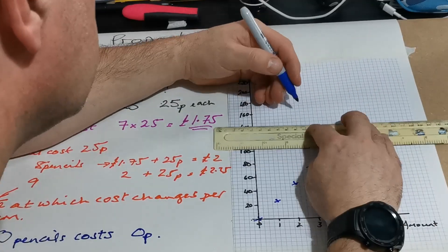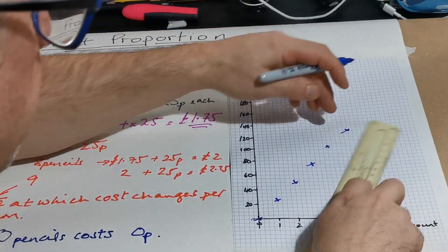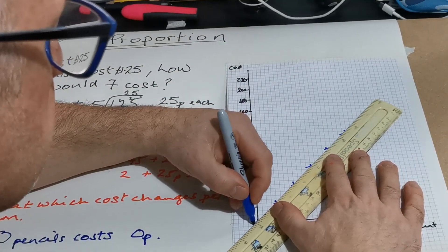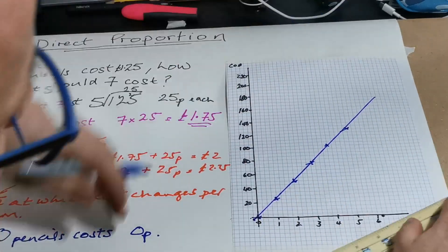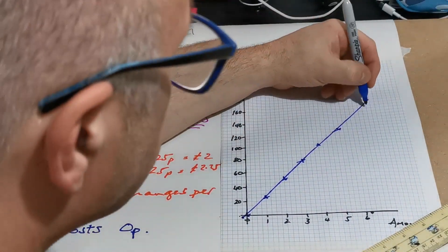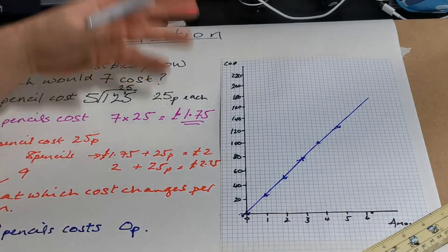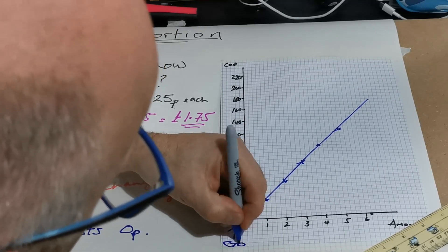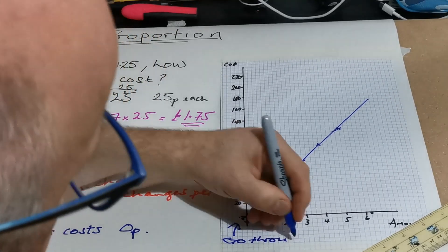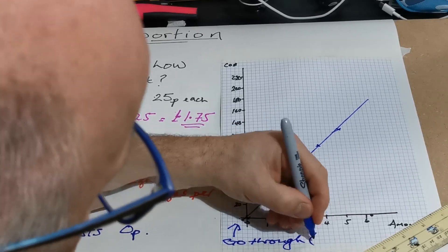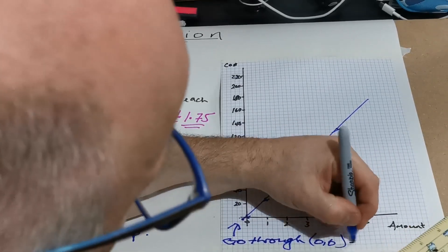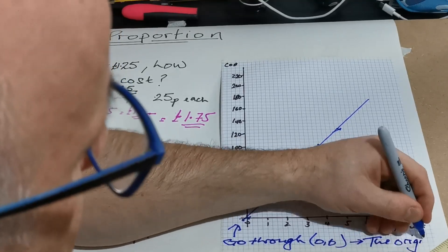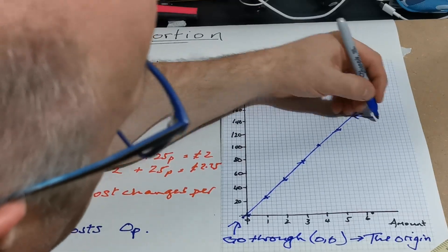And six is £1.50, which is somewhere up here. Anyway, when I put my ruler along those, you can see that if I've done that correctly, they'll make a straight line. So all things that are in direct proportion, things you notice about their graph, is that they go through zero, zero, which we call the origin. And then make a straight line.